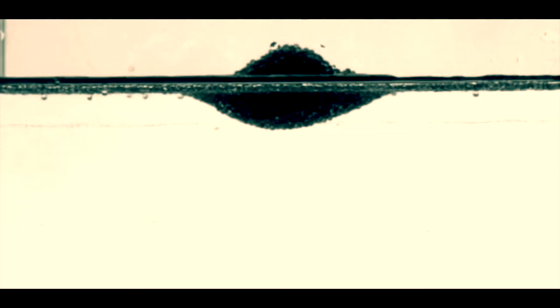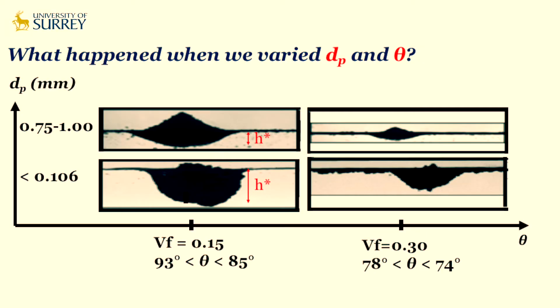What happens when the particle size and the contact angle are varied? Looking at the y-axis where particle size is varied, the critical depth of island built by smaller grains is higher than that built by bigger grains. On the x-axis, as we increase the ethanol volume fraction (VF), the contact angle decreases and the critical depth of island decreases.